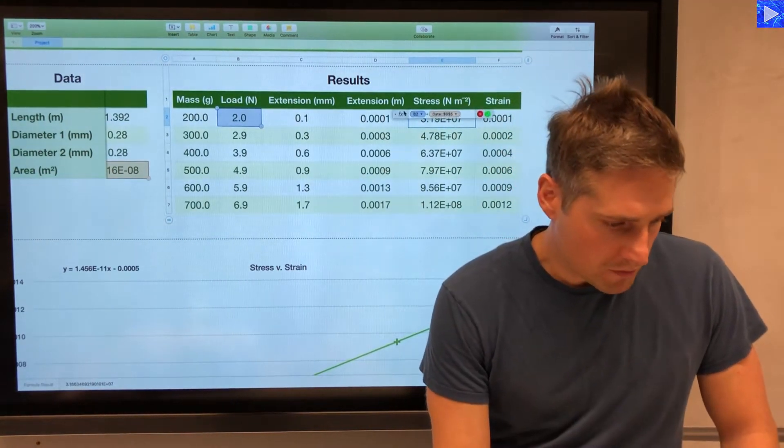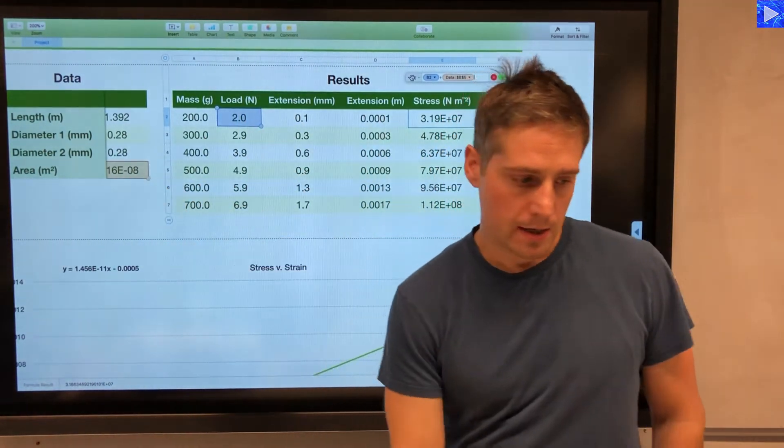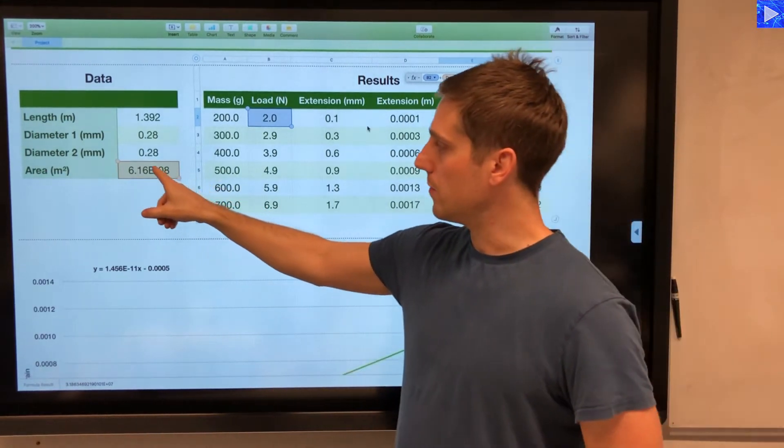If I open up that formula, what I'm doing here is I'm taking the load and I'm dividing it by the cross-sectional area of the wire.